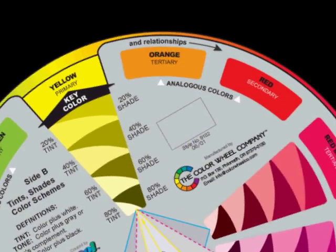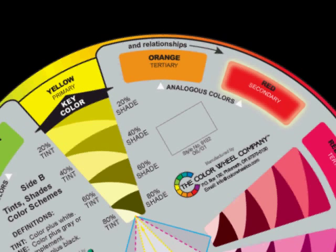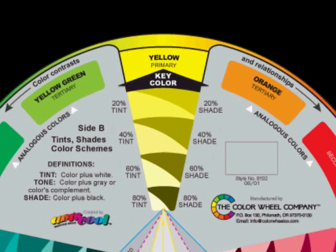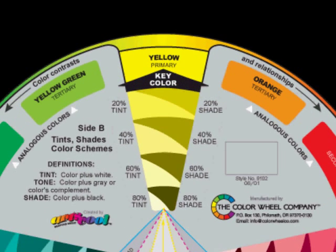The outer pure color band on this side of the wheel shows each color to be primary, secondary, or tertiary — tertiary meaning the third stage. Tints and shades are shown in the inner segments of the wheel.